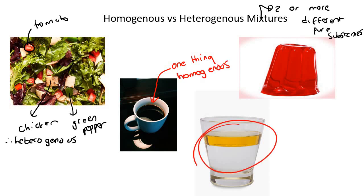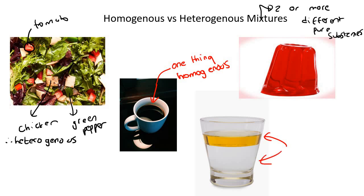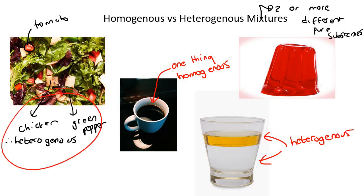What about this one over here? Can you see different things or is it all one thing? Well, no — there are clearly different parts. There's one part and there's another part. So because there's more than one part, it'll be heterogeneous.